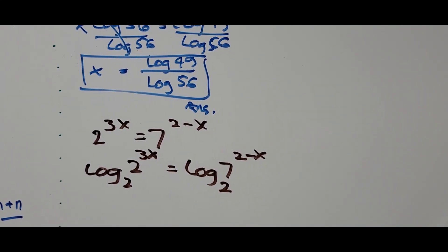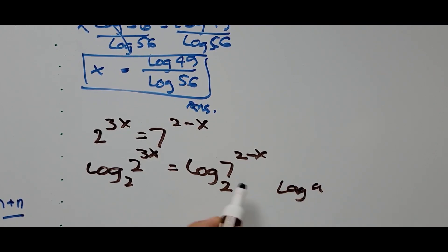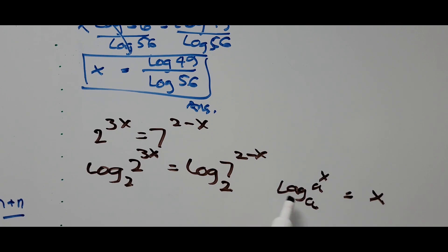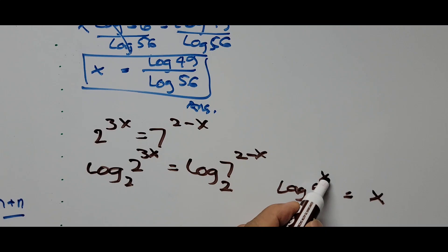We employ the logarithm rule: the log of a raised to x to base a equals x. The logarithm of base a to the same base a cancels, so we bring down just the exponent x.